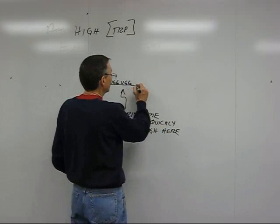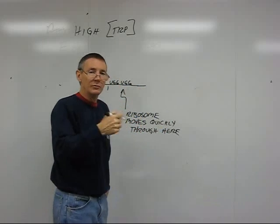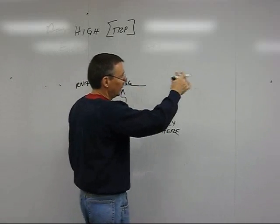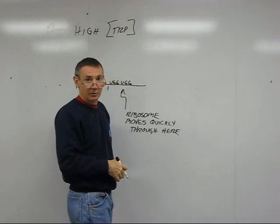But it gets through there, goes through to the stop codon, and then it continues moving along as the RNA is being produced. And the RNA, remember RNA polymerase is out here transcribing this.